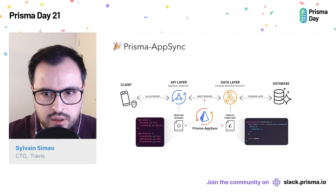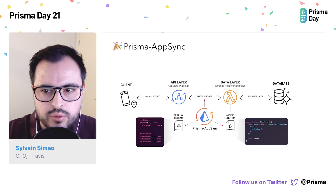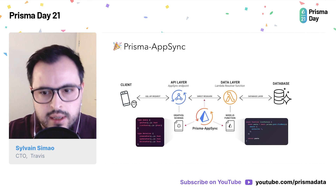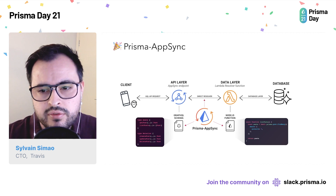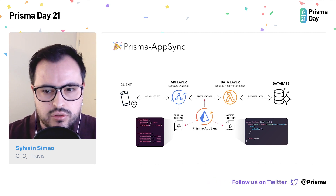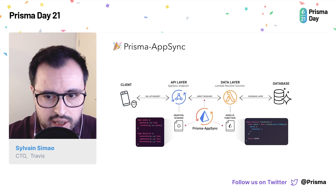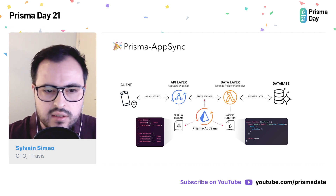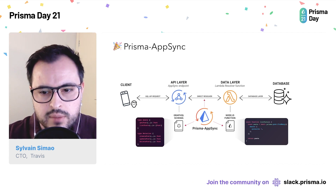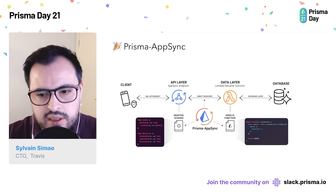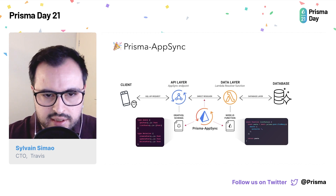Introducing Prisma AppSync — a Prisma generator that will automatically generate everything we need to create a GraphQL API based on a Prisma schema. With Prisma AppSync, we can use the same file and data structure to quickly iterate on our API. And because it is built using AppSync, we get real-time subscriptions, advanced security methods, and high availability out of the box. But enough theory — let's get to practice.